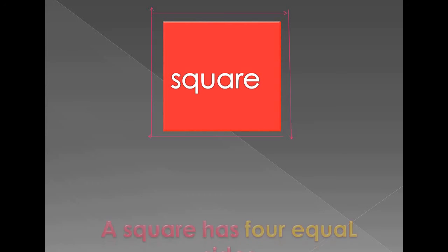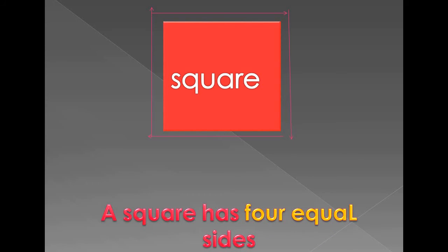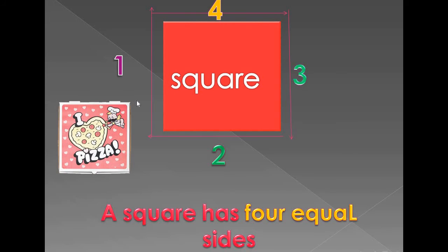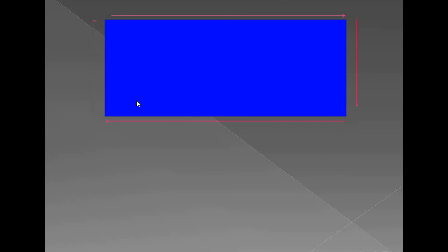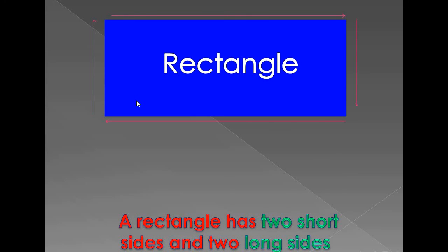Square! A square has four equal sides: one, two, three, four - like a pizza box and window. Rectangle! A rectangle has two...